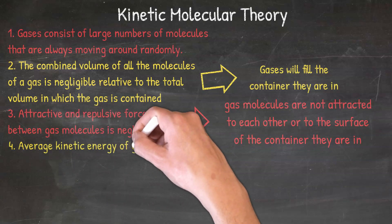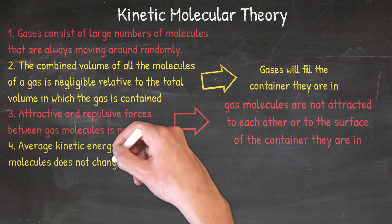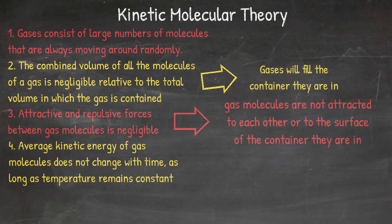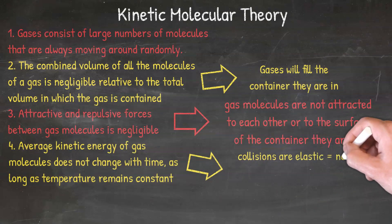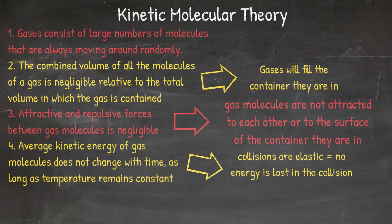Number four is that the average kinetic energy of gas molecules does not change with time as long as the temperature remains constant. When we think of gas molecules moving around randomly, we know that collisions are going to happen. However, those collisions are always elastic, which means no energy is lost in the collision. This means that as long as you keep the temperature constant, it is safe to assume that the average kinetic energy of the gas molecules is also remaining constant.